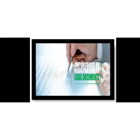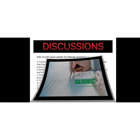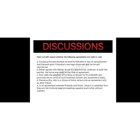We now move on to discussions where you have to find out whether the following agreements are valid or void. Number one: Kamla promises Ramesh to lend rupees five lakh in lieu of consideration that Ramesh gets if Kamla's marriage is dissolved and he marries her. As per Section 23 of the Indian Contract Act 1872, an agreement is void if the object or consideration is against public policy. Therefore, this agreement is a void agreement.